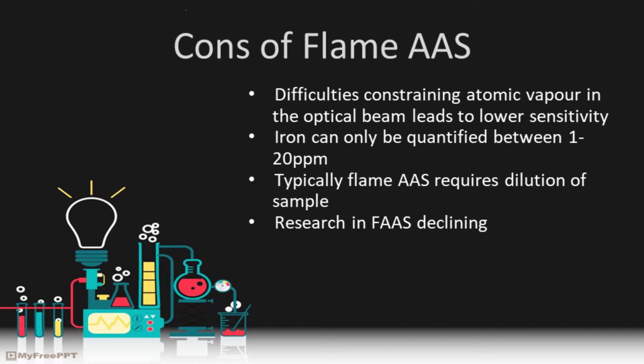The most striking flaw is the difficulty constraining atomic vapor in the optical beam. This leads to lower sensitivities, therefore requiring greater concentrations of iron before detection is possible. There are also limits to the scale on which iron can be quantified, normally requiring a concentration in the order of one to twenty parts per million. This may lead to the need to dilute many samples prior to analysis, which increases the chances of error as well as time and energy preparing samples. Furthermore, few improvements are being actively researched into flame AAS as other more modern instruments are leading the way in analytical analysis of iron and other metals.